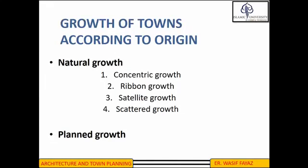Growth of towns according to origin can be classified into natural growth and planned growth. In natural growth, most towns in the past were built in a natural way and development took place without any future planning. The men on the spot and the interested parties took decisions regarding the growth of towns for immediate comfort and convenience of the residents, and the provision of various amenities such as road systems, parks, playgrounds, schools, and industrial units were made in an irregular way without any consideration for the future expansion of the town.